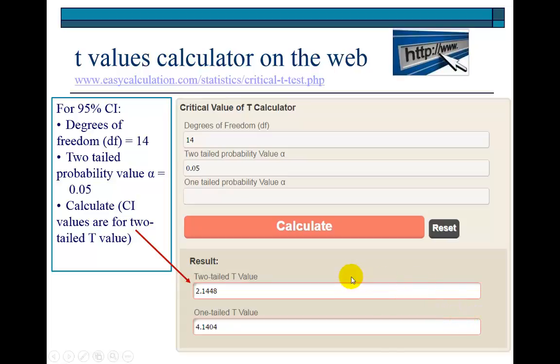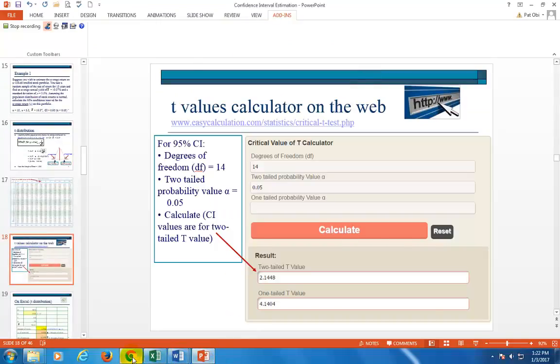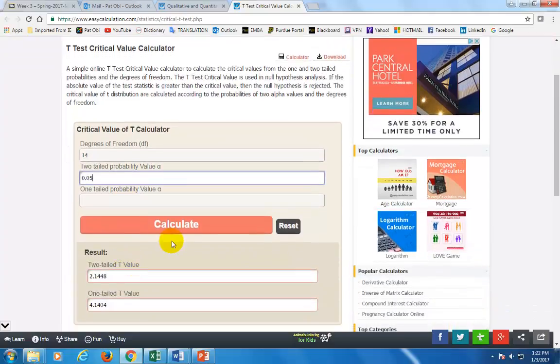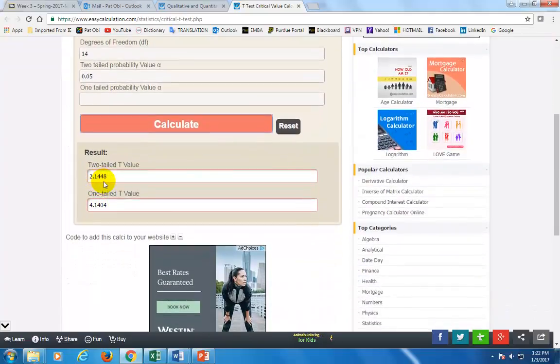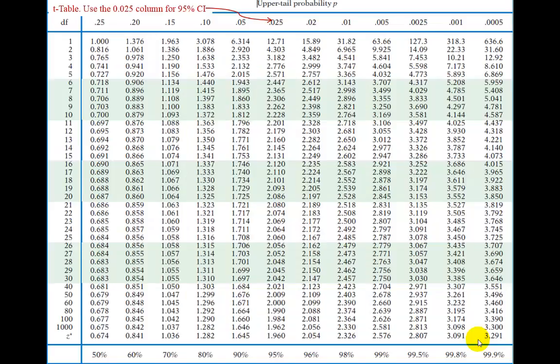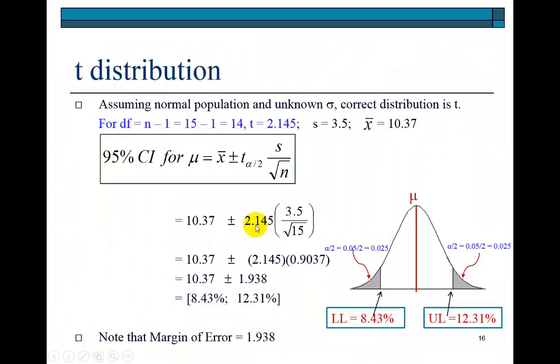There's a bunch of websites out there that provide calculators for critical values. These are freeware on the World Wide Web. To use this website, you simply need to type in the degrees of freedom, which is 14, and the two-tailed probability value would be 0.05. Then you calculate and you see the critical value 2.1448, and that's what we used in calculating the confidence interval.